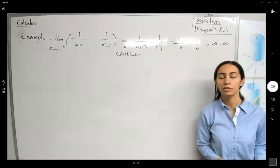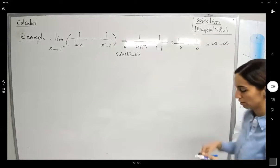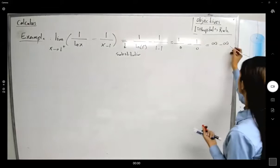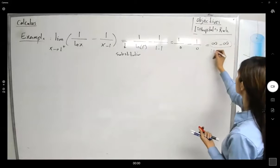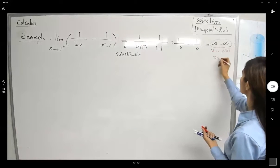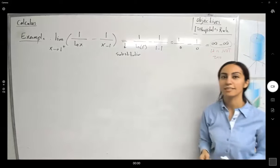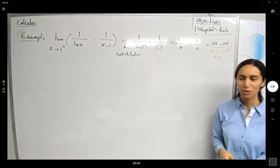Guys, infinity minus infinity is not 0. It's indeterminate form. So what should we do?